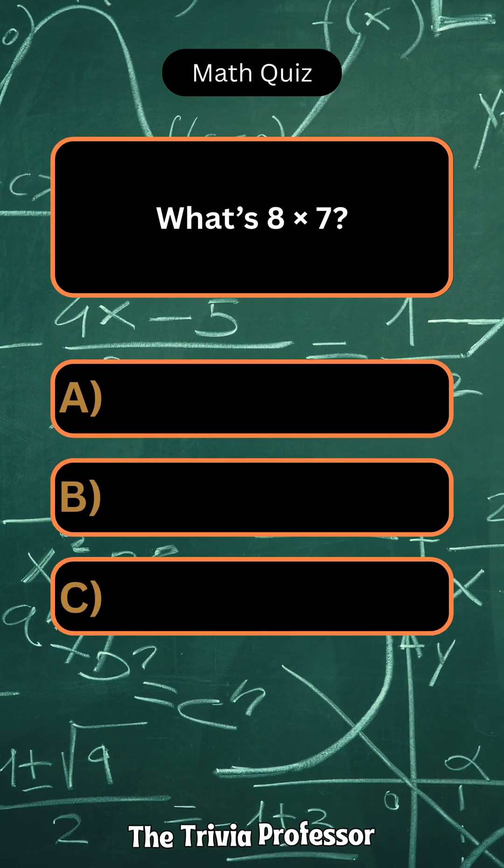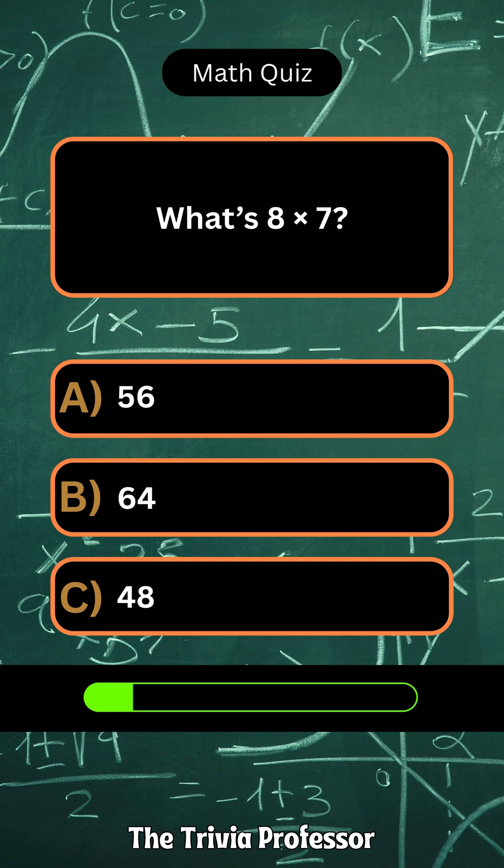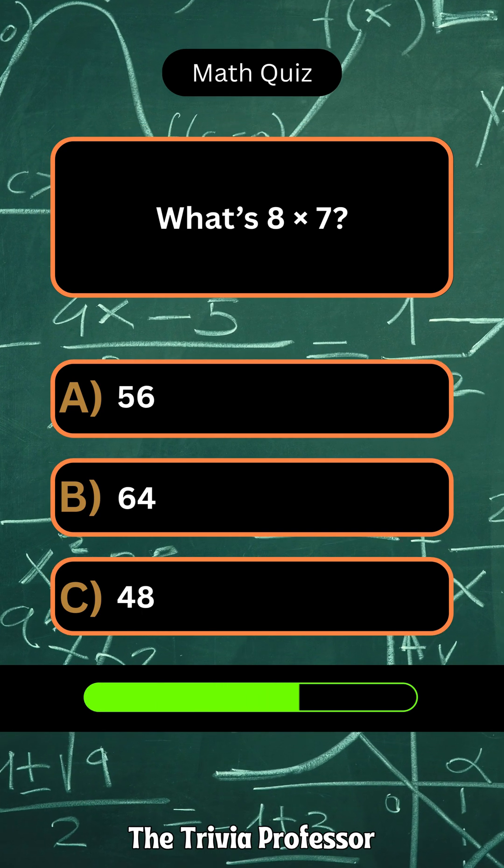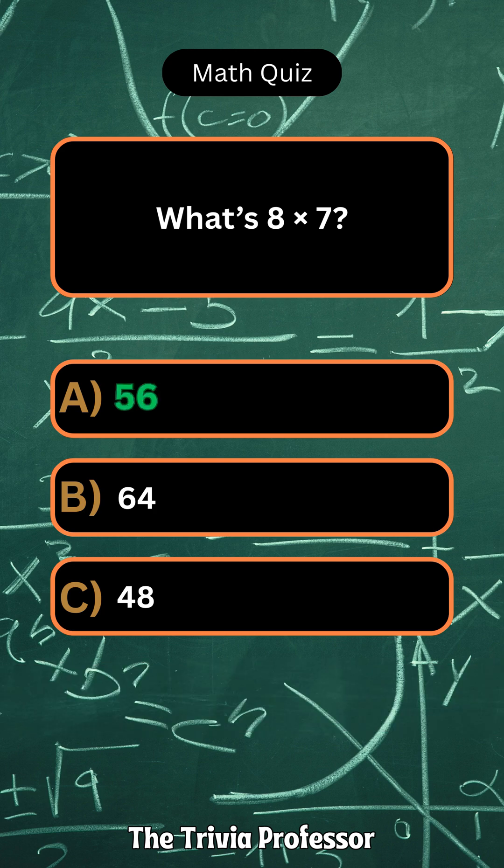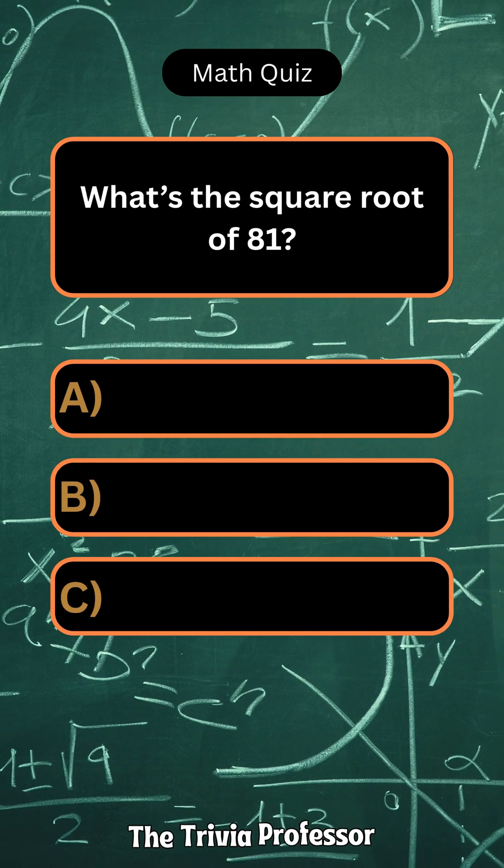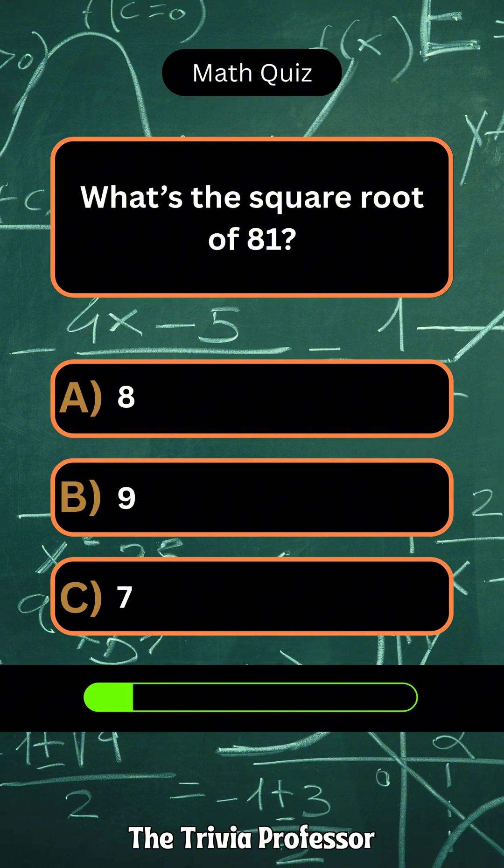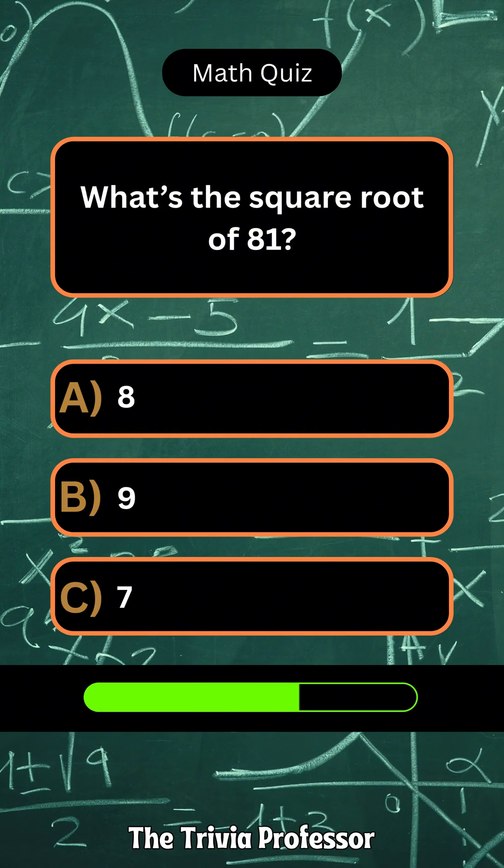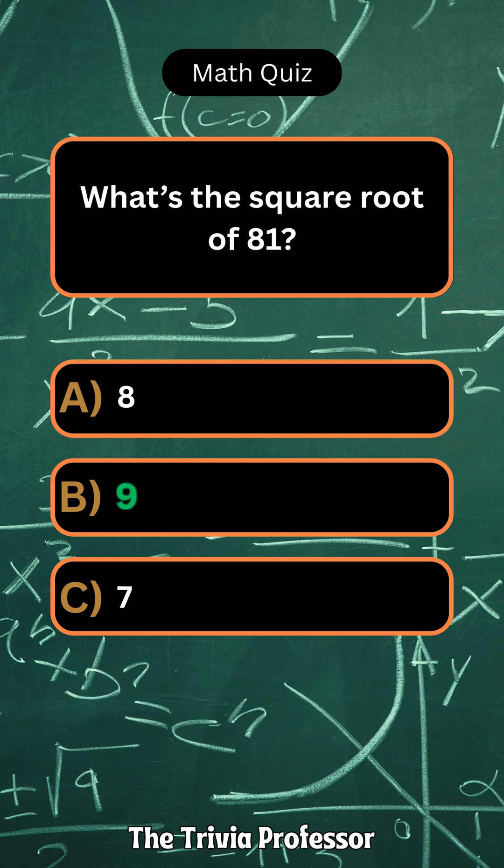What's 8 times 7? 56. What's the square root of 81? 9.